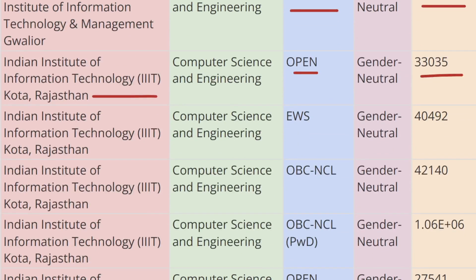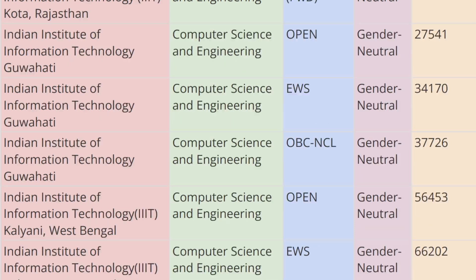Next we have IIIT Kota Rajasthan. For Open category the cutoff rank is 33,035, for EWS category the cutoff rank is 40,492, and for OBC-CL the cutoff rank is 42,140.